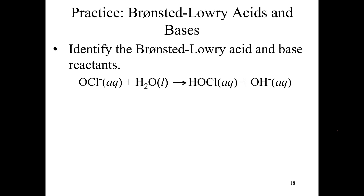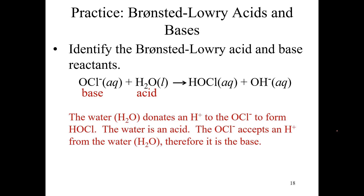Let's do a little practice. Please look at the following equation and see if you can identify who is the Brønsted-Lowry acid and who is the Brønsted-Lowry base. In this reaction, water is donating a hydrogen to the OCl minus — the hypochlorite ion — to form HOCl, which is hypochlorous acid. So water acts as the acid, and the hypochlorite ion accepts a hydrogen from the water; therefore it is the base. One way to visualize it: ask who is losing a hydrogen — that's the acid; who is acquiring a hydrogen — that's the base.